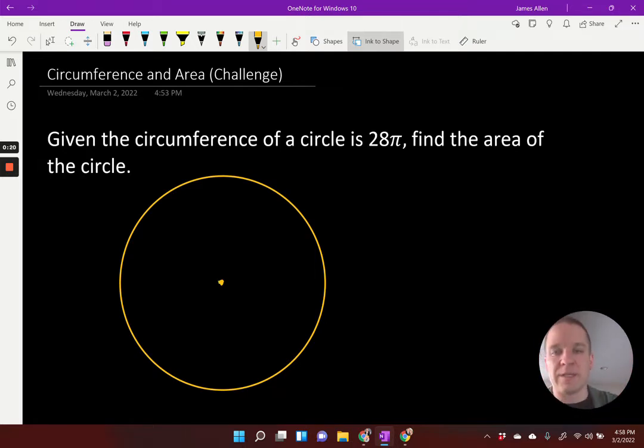All right, so here's my center. Now, the circumference of the circle is 28π. So circumference formula, maybe we should jot that down, is 2 times π times the radius, or it's π times diameter, right?